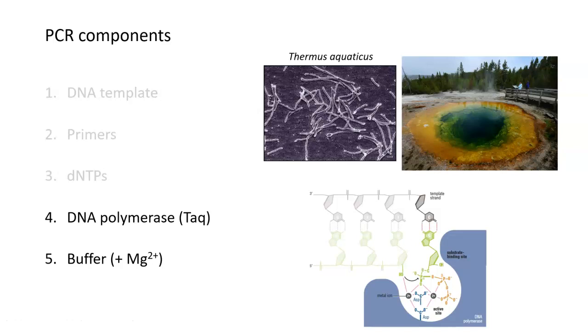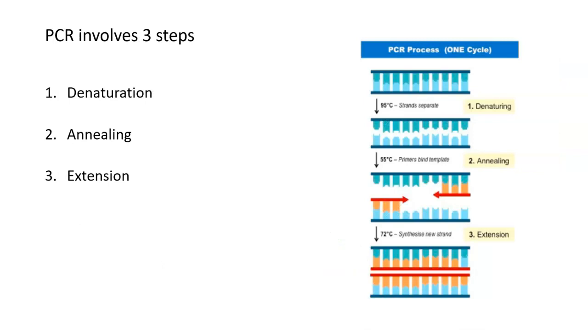These five components are all added to a tube and mixed together. Then those reactions are put into the thermal cycler, which runs a reaction involving these three steps. Every PCR involves three steps: denaturation, annealing, and extension. A set of one denaturation, one round of annealing, and one extension is referred to as one cycle. Generally, a PCR will repeat this cycle 30 to 40 times.